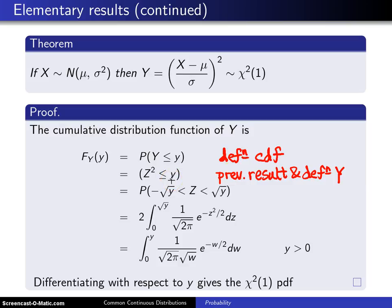A little algebra shows that the probability of Z² less than or equal to y is the same as Z lying between negative square root of y and positive square root of y.